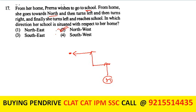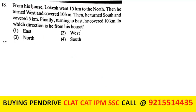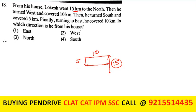From his house, Lokesh went 15 km north, then 10 km west, then 5 km south, and finally 10 km east. Comparing final position to start: east/west cancel (10 west, 10 east), north/south: 15 - 5 = 10 km net north. He is north of his house. The third option is the answer.